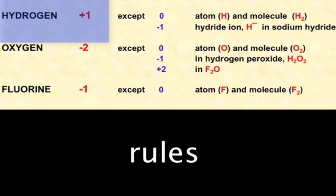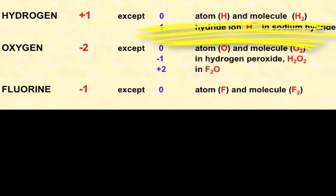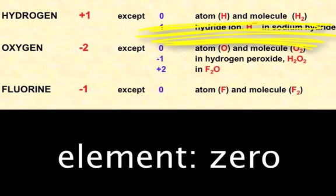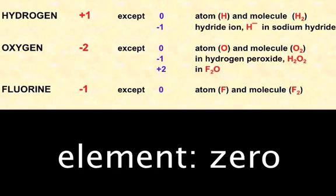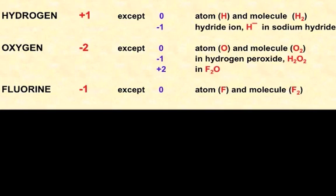Basically hydrogen will always have an oxidation state of plus one except in a hydrogen molecule when it will have an oxidation state of zero, and also there's a particular example where it's joined to a group one metal where it will be a hydride ion and then it will be minus one.